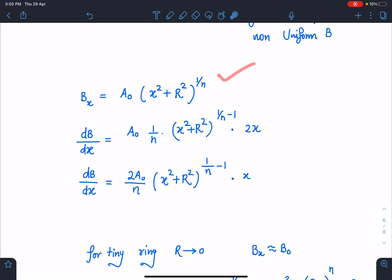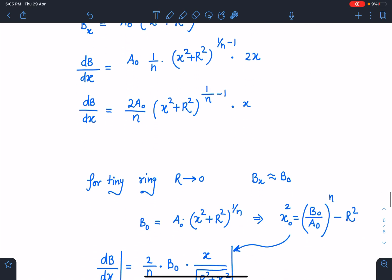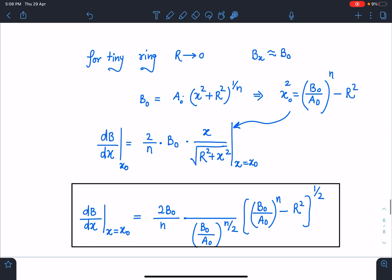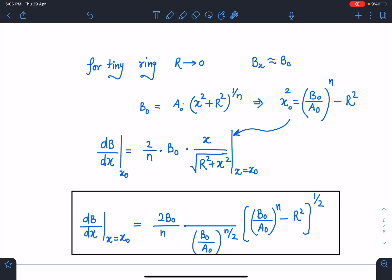So B value is given here as A₀(r² + x²)^(1/n). We can calculate this dB/dx. And guys, I am not explaining this calculation, so here you can see for tiny ring, this r is tending to 0. In that situation, though it is r₀, but it is a very small value. In that situation, Bₓ is actually B₀ which is given in the problem. So from here we will get the x coordinate at which ring is placed.